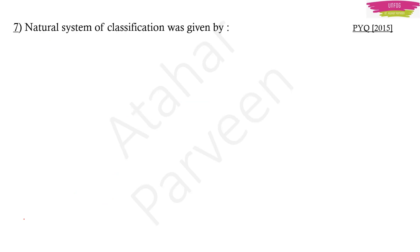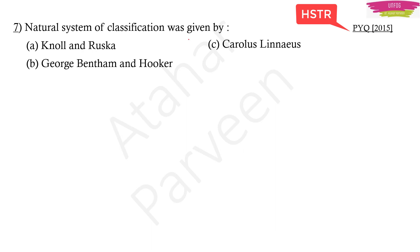The next question was actually a previous year question asked in 2015. Natural system of classification was given by — try answering without even seeing the options. The options are: Nolan Ruska, George Bentham and Hooker, Carolus Linnaeus, and Engler and Prantl. The answer is George Bentham and Hooker — George Bentham and Joseph Dalton Hooker gave the natural system of classification. I put pictures of these scientists as well.